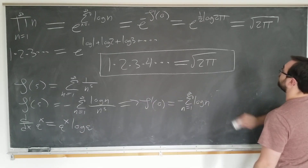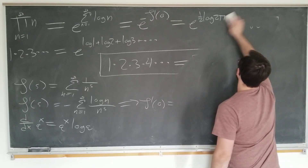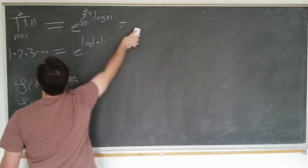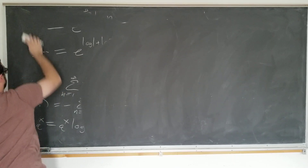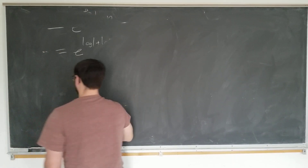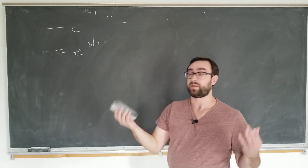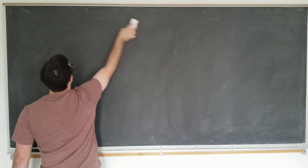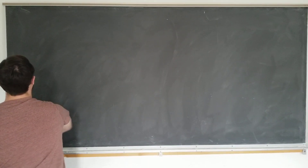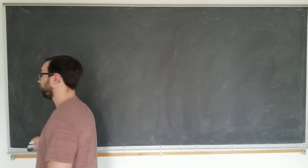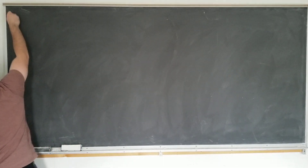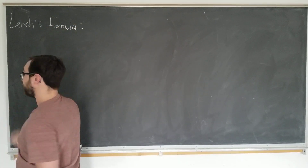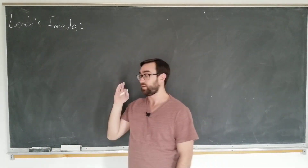We have one more related formula — this is the coolest one; if you only remember one from this video, please remember this one. This next result originally got me interested in doing this video because it led me down a rabbit hole trying to derive zeta prime values. I want to derive what is called the Lerch formula. Even though it has a name, the proof is very difficult to find.